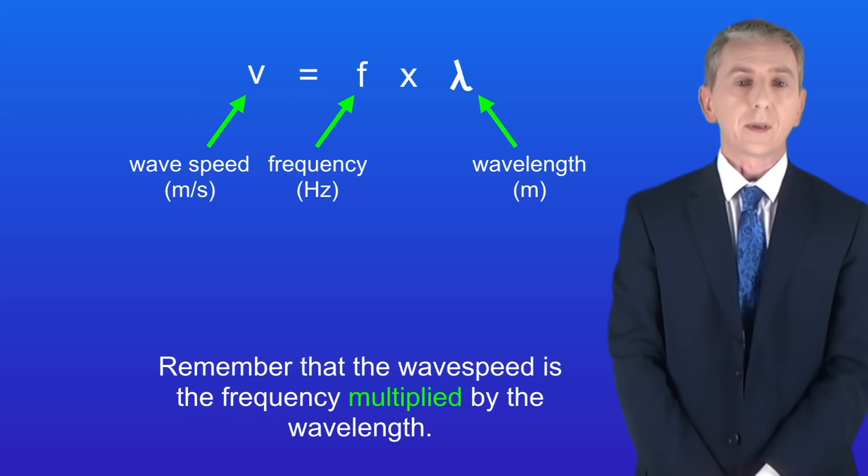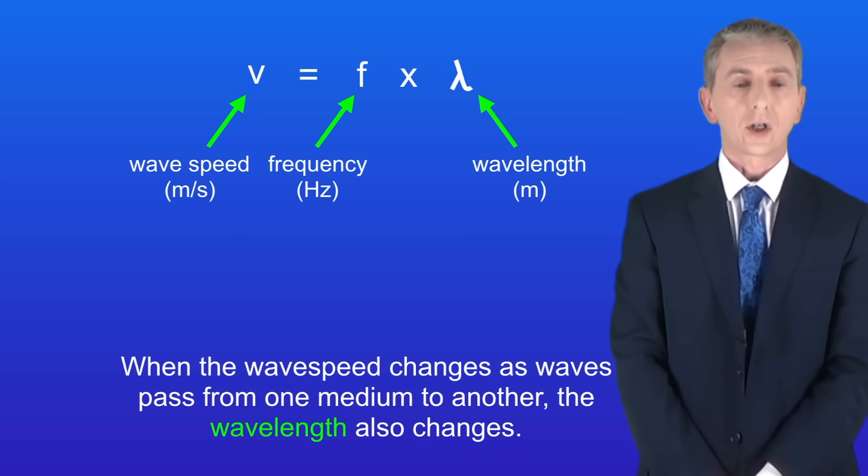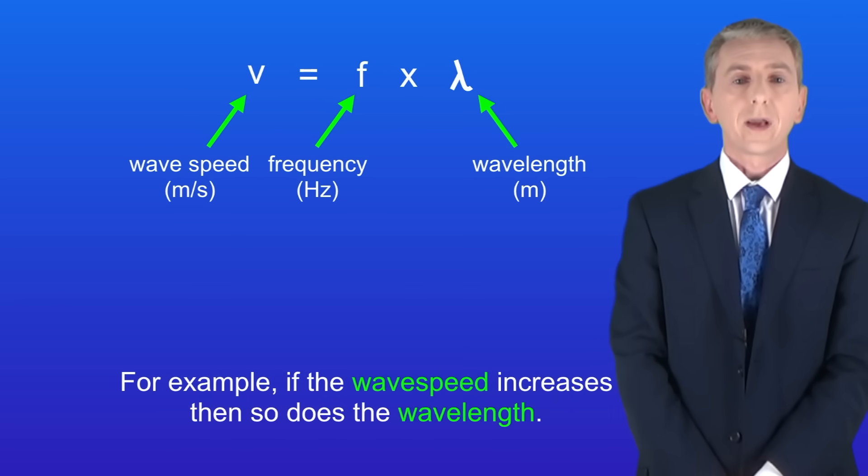Remember that the wave speed is the frequency multiplied by the wavelength. So when the wave speed changes as waves pass from one medium to another the wavelength also changes. For example if the wave speed increases then so does the wavelength.